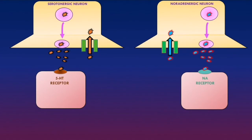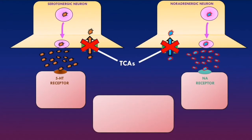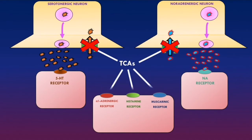Tricyclic antidepressants, or TCAs, work similarly to SNRIs in that they also inhibit both serotonin and noradrenaline reuptake from the synaptic cleft back into the presynaptic neurons, increasing availability of both neurotransmitters to help with depression. However, TCAs are not very specific and also inhibit other receptors in the body, including alpha-1 adrenergic receptors, histamine receptors, and muscarinic receptors. This high side effect profile is why TCAs are no longer generally used to treat depression.